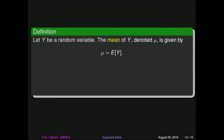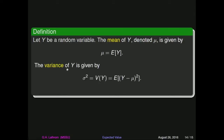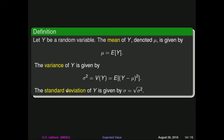We'll get a lot of mileage out of these next definitions. The mean of the random variable y, denoted by the Greek letter mu, is equal to the expected value of y. The variance of y is defined to be the expected value of the quantity y minus mu squared, denoted sigma squared or V of y. The standard deviation is just the square root of the variance.